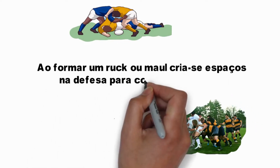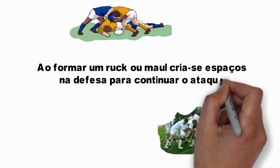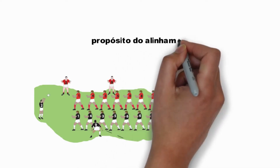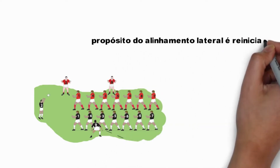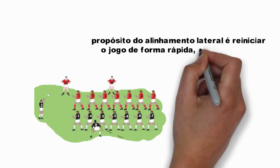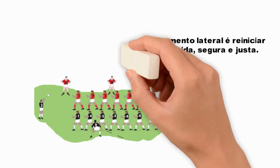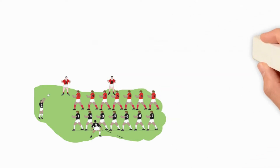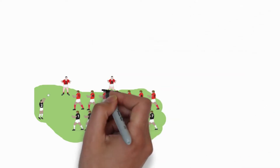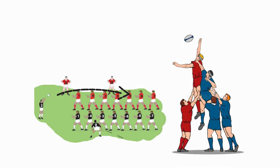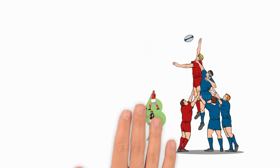Ao formar um ruck ou um maul, cria-se espaço na defesa para continuar atacando. Quando a bola sai do campo pela linha lateral, forma-se um line-out. O propósito do alinhamento lateral é reiniciar o jogo de forma rápida, segura e justa. O time com a posse da bola deve lançar a mesma entre as duas fileiras dos jogadores, e os atletas saltam, muitas vezes com a ajuda de um companheiro, para agarrar essa bola arremessada.